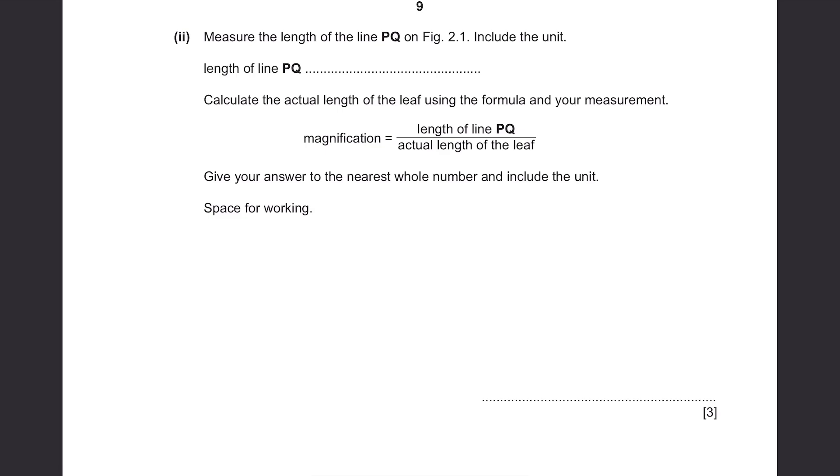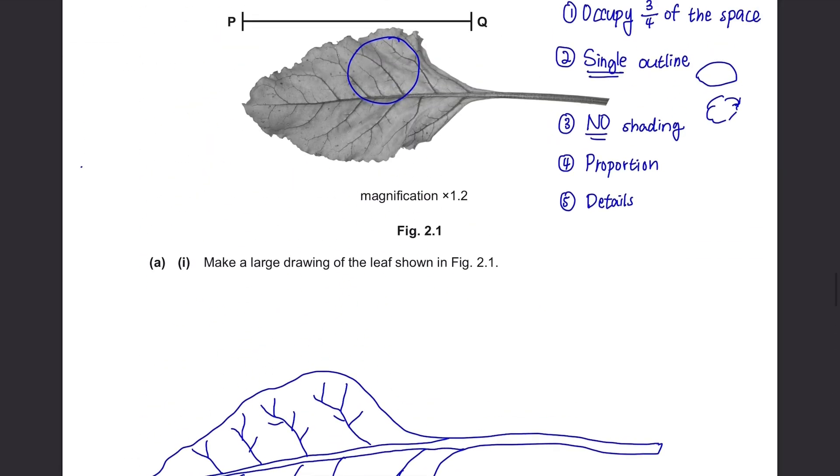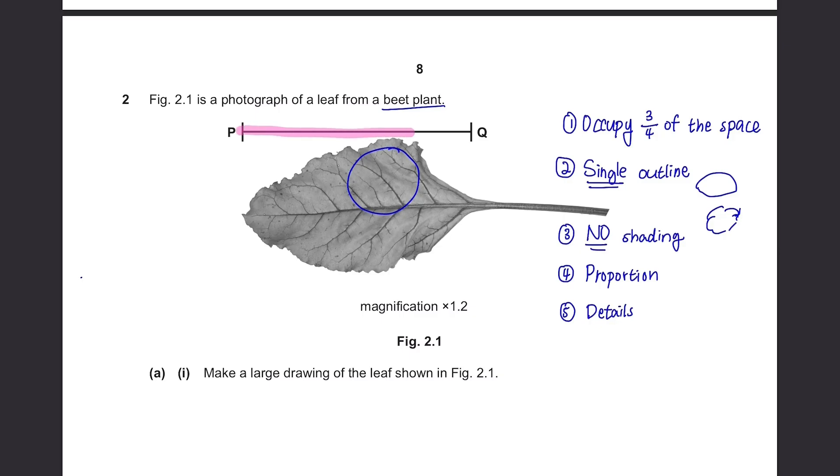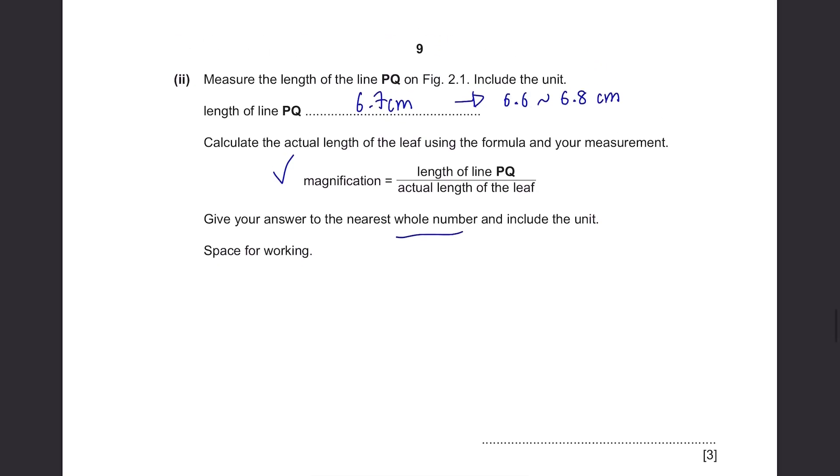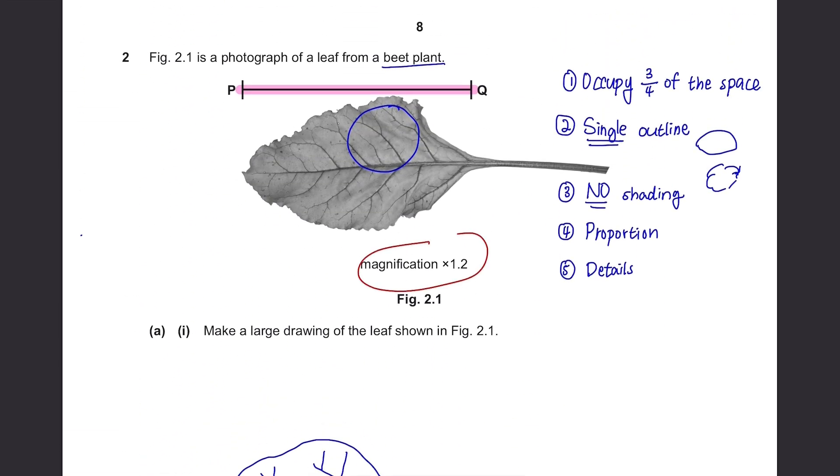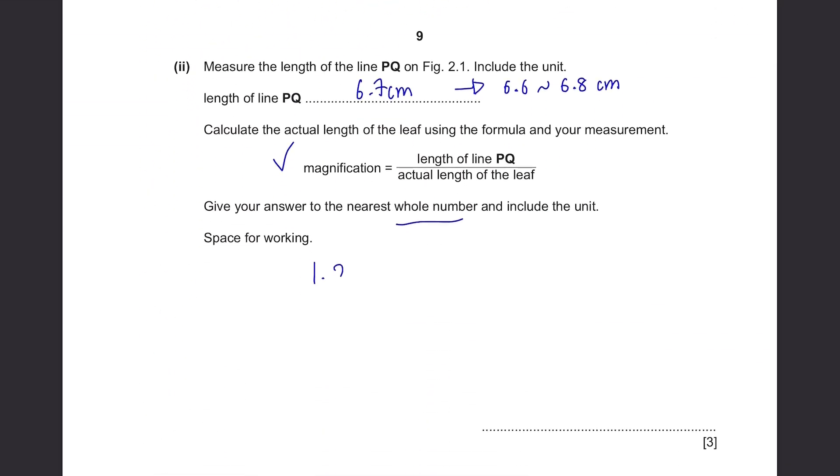Measure the length of the line PQ on figure 2.1. Include the unit. Length of line PQ. You just have to measure this line. You should get 6.7 cm. And it can be from 6.6 to 6.8 cm. Calculate the actual length of the leaf using the formula and your measurement. The formula is given. Give your answer to the nearest whole number and include the unit. Well, magnification, it's not given at this part of the question but it was over here. It's 1.2. 1.2 equals to length of line PQ which is 6.7 divided by the actual length which is something that we need to find. I'll just put it as X. Then do your calculations. It's 5.5833 and so on but it's nearest whole number so I'll put it as 6 cm.